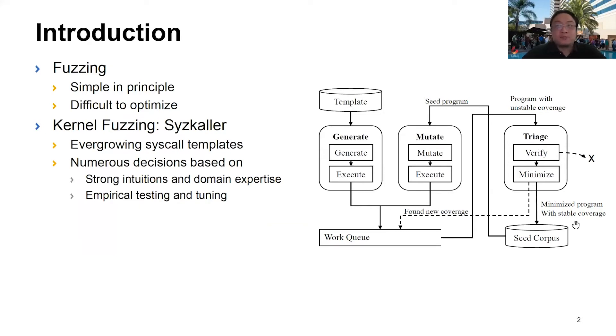Kernel fuzzing is even more complex, which is large code space, unique system call interfaces, and concurrency considerations. To perform effective fuzzing in kernel space, Syzkaller, the state-of-the-art kernel fuzzer, utilizes an ever-growing template database to generate valid input for the kernel. Syzkaller also incorporates numerous decisions based on strong intuitions, domain expertise, empirical testing, and tuning.